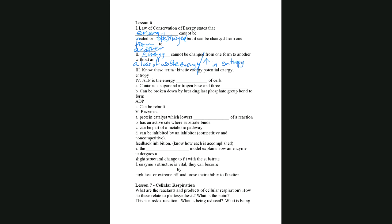We should understand the difference between kinetic and potential energy. Kinetic is the energy of motion — and specifically, light energy is a form of kinetic energy, which is important for when we discuss photosynthesis. Potential energy, for this unit, is the energy stored in chemical bonds — between atoms those bonds are considered potential energy. Entropy is a measure of disorder or randomness.